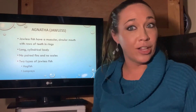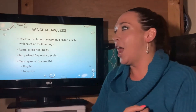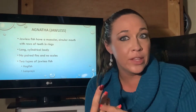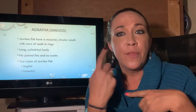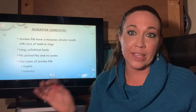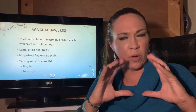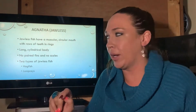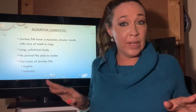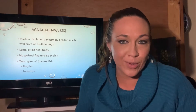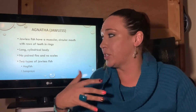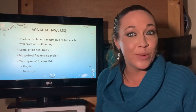The Agnathans are jawless fishes — they have a mouth, just not a hinged jaw. They have a circular mouth often lined with small teeth. They can be parasitic, free-living, or scavengers depending on the species. Their body is long and cylindrical, almost snake-like. They do not have paired fins and do not have scales, making them among the most primitive of fishes. The two types are hagfish and lampreys.